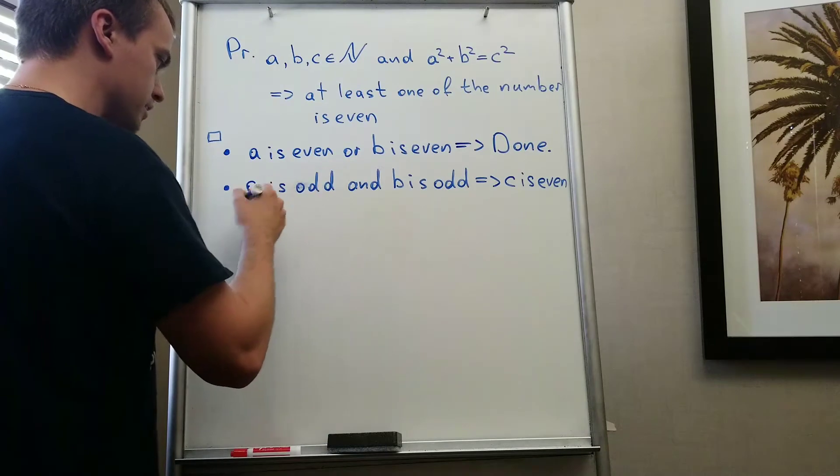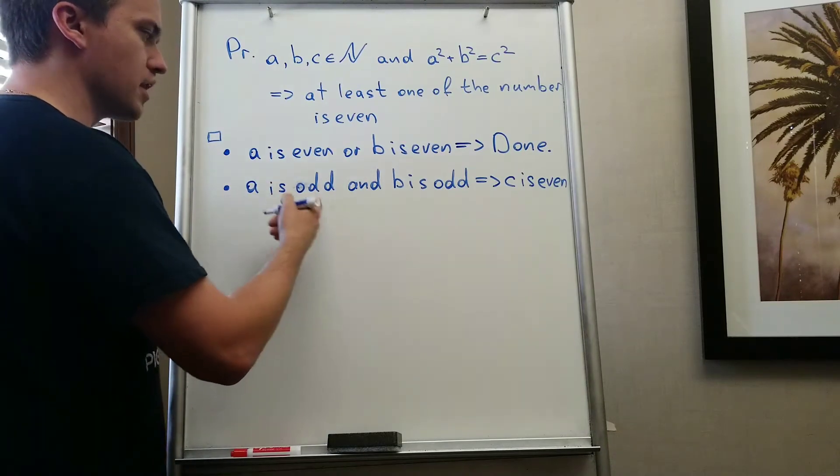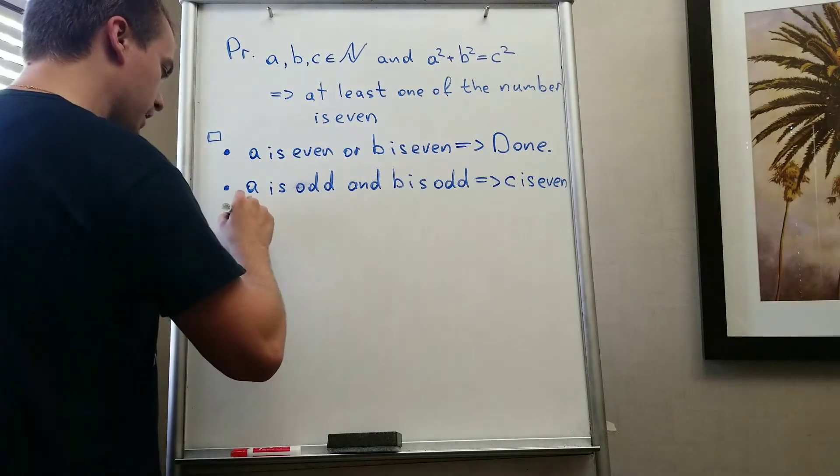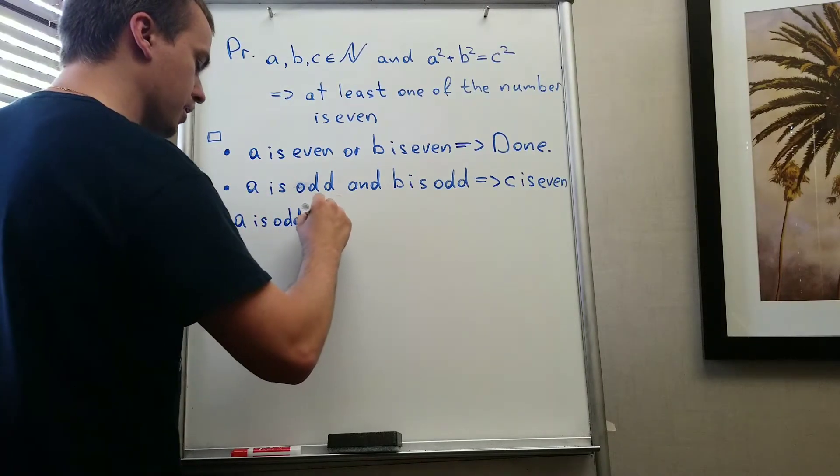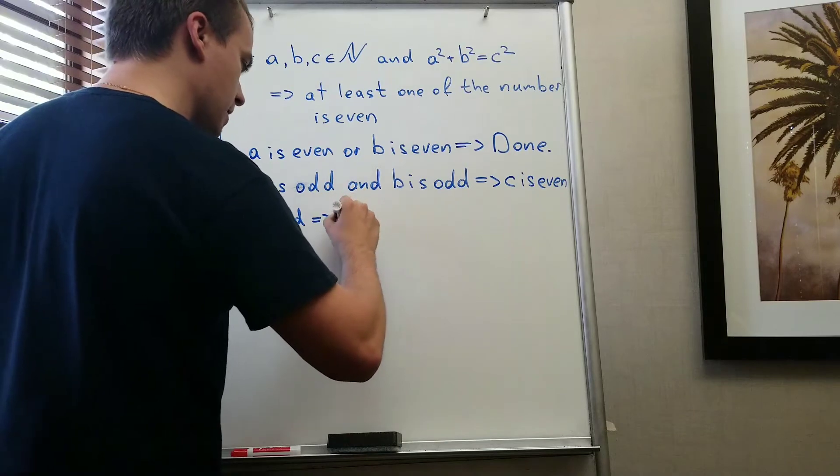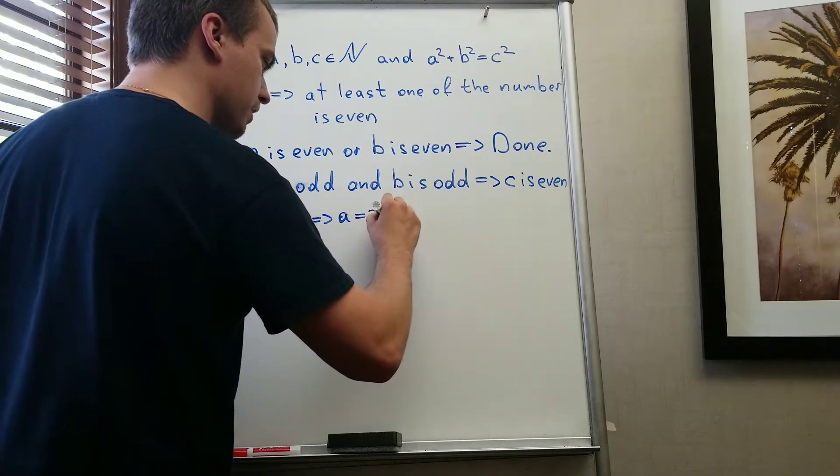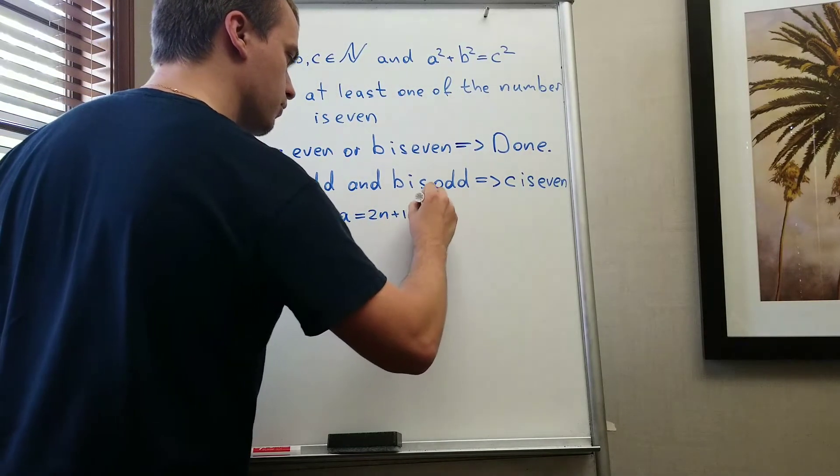Since I know that a is odd and b is odd, I can conclude that since a is odd, by using the definition of odd number, I can say that a equals 2n plus 1 for some natural n.